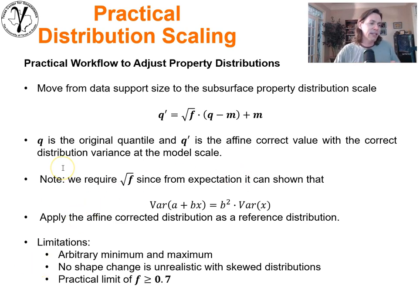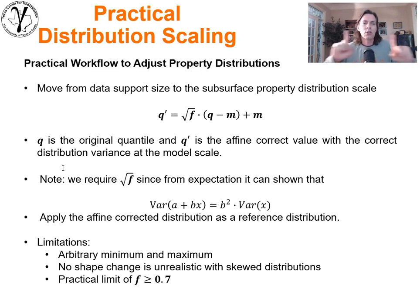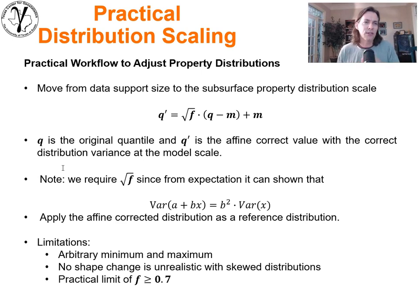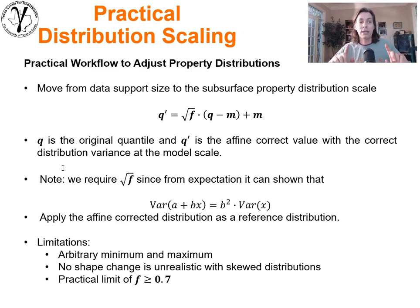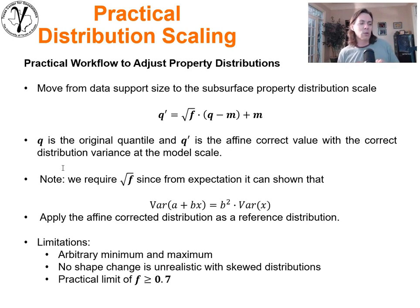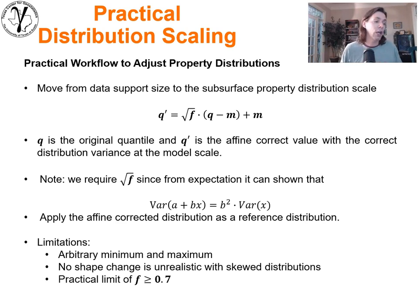There are limitations. There's going to be an arbitrary minimum and maximum — anytime you stretch or squeeze a distribution the variance is corrected but without any shape change, it could result in unrealistic values. Specifically, if you try to use this for downscaling, you could end up with negative porosity very easily. Also, a log-normal distribution scaled up does in fact have a shape change — it becomes more symmetric and doesn't simply stay the same shape squeezed together. Experts suggest a practical limit of about an F-factor of 0.7; anything beyond that implies too much change in the distribution and you should consider a shape change as well.